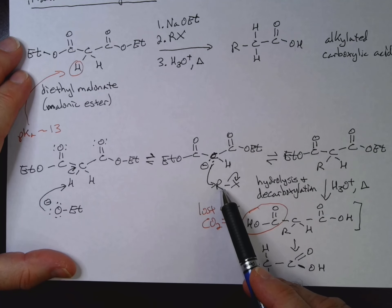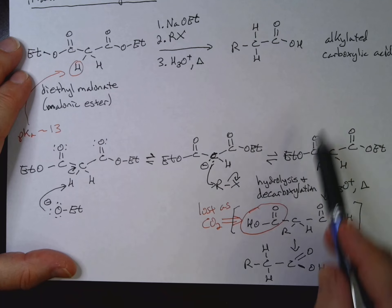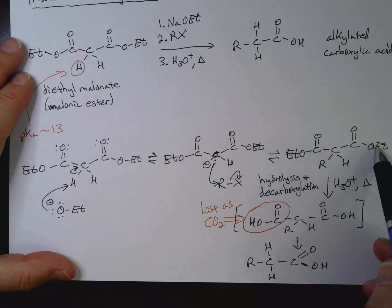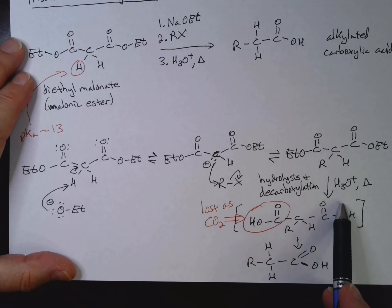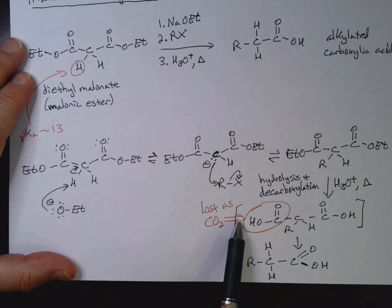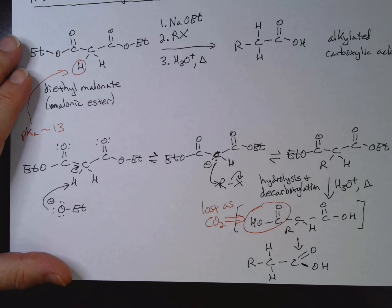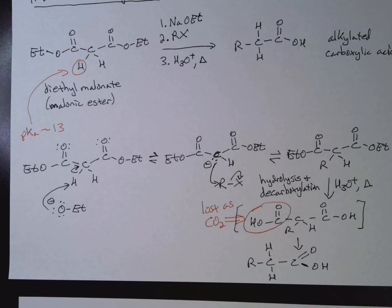So key steps here are deprotonation by our base of the alpha protons that are in between the two carboxyls. Then we can do an SN2. We could actually repeat that and stick another alkyl group on. And then we hydrolyze to make a diacid and heat it up to decarboxylate. And that gives us now our substituted, excuse me, our alkylated carboxylic acid.